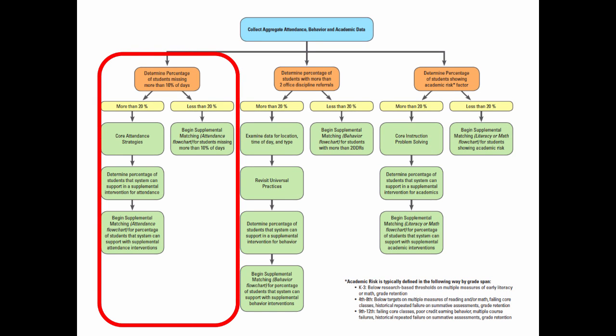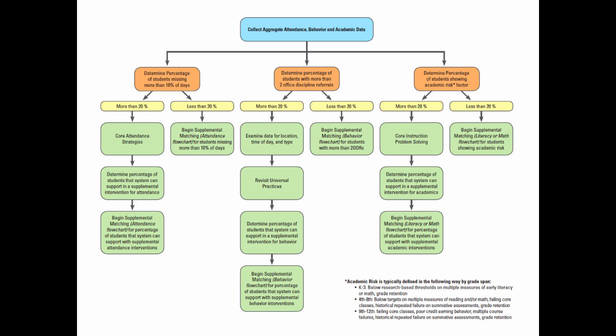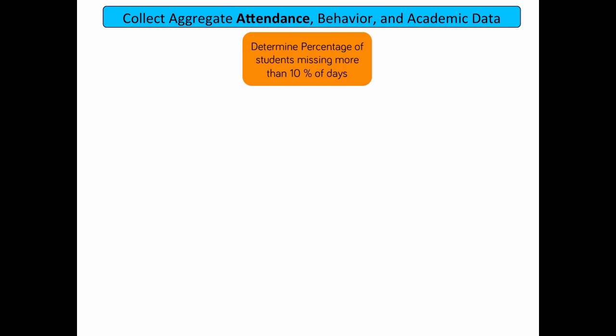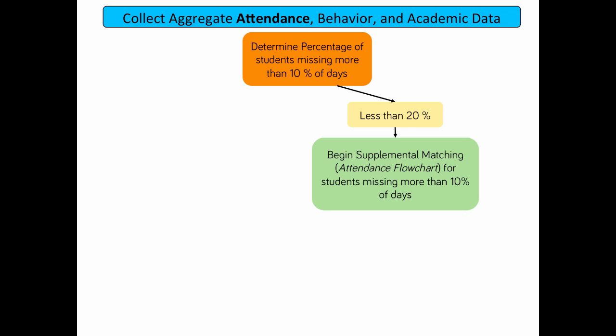Let's begin building our flowchart by focusing on the far left side: attendance. Our first step with attendance is to identify the percentage of students who have missed more than 10% of school days. If that percentage is less than 20% of the grade or school, then we can begin matching these students to supplemental interventions. We will visit specific attendance strategies in Module 2.3.